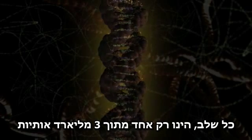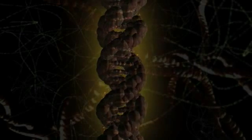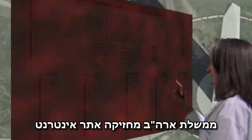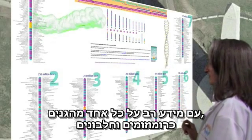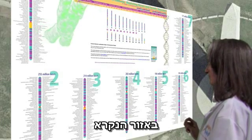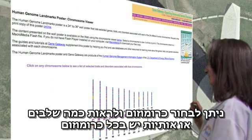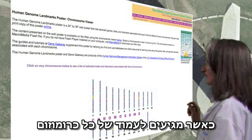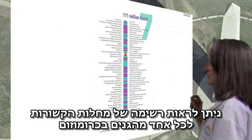Each of these rungs is just one of the 3 billion letters that make up the book of our instructions. The U.S. government maintains a website with much of the current information about genes, chromosomes, and proteins. In the section labeled Chromosome Viewer, you can select a chromosome and see how many base pairs or letters are on the chromosome. When you get to the webpage for each particular chromosome, you can see a list of traits and disorders associated with genes on that chromosome.